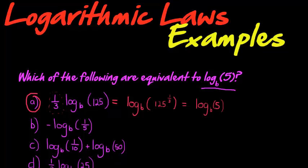Negative log base b of one-fifth. Again, my coefficient of the log, this negative 1, becomes the exponent of the input of the log, which in this case is one-fifth. It now gets an exponent of negative 1.